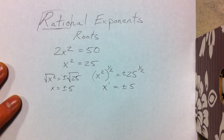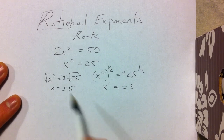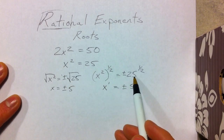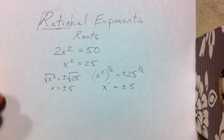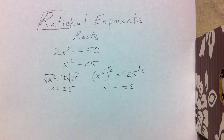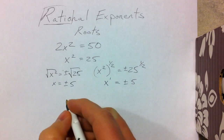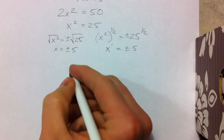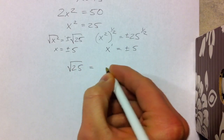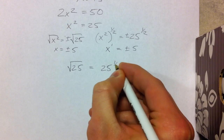So why do we need fractional exponents if we've already been using the square root? We shall see — sometimes it's easier to have fractional exponents, and sometimes it's easier to have square roots. What we need to realize is that the square root of 25 is the same thing as 25 to the 1/2 power.